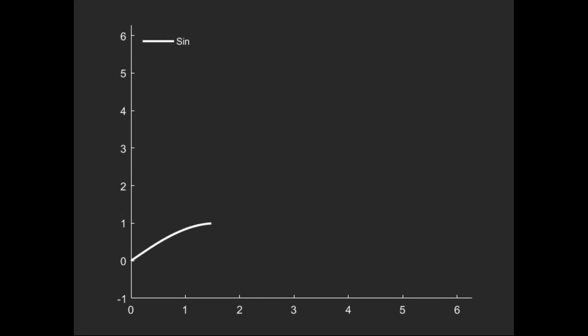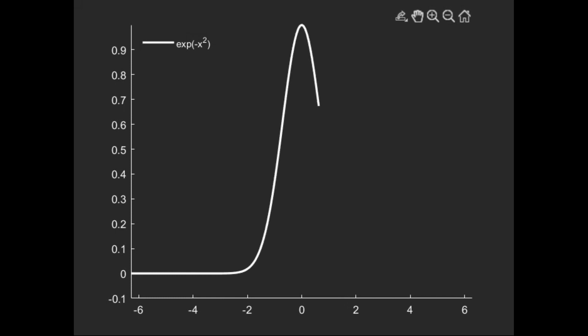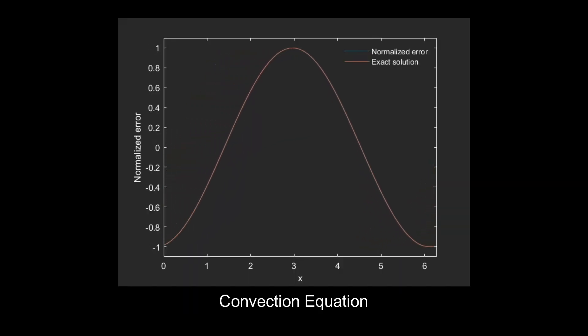The first one is the sine curve, which has one wave number, and the second one is the Gaussian pulse, which has a range of wave numbers. When we apply the sine curve to the equations we consider, the error follows the dynamics of the governing equation.